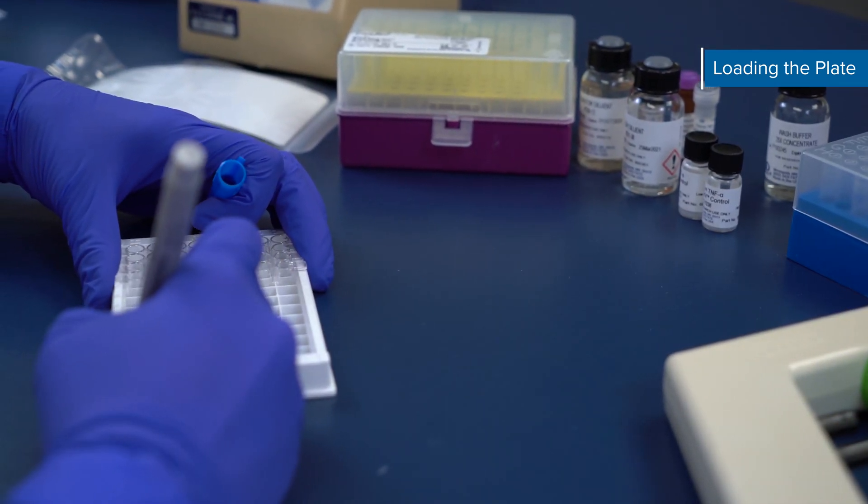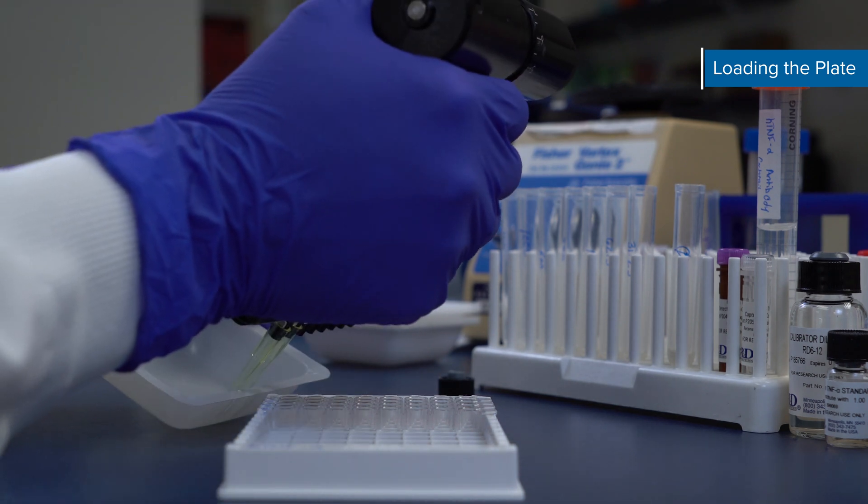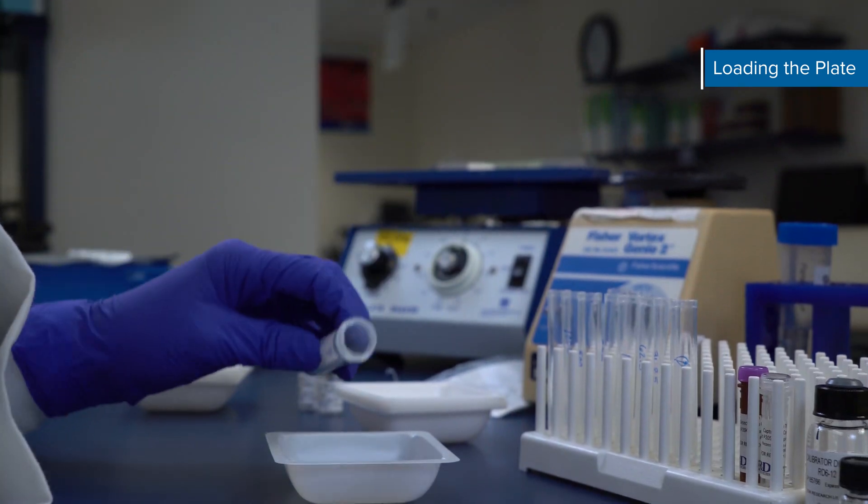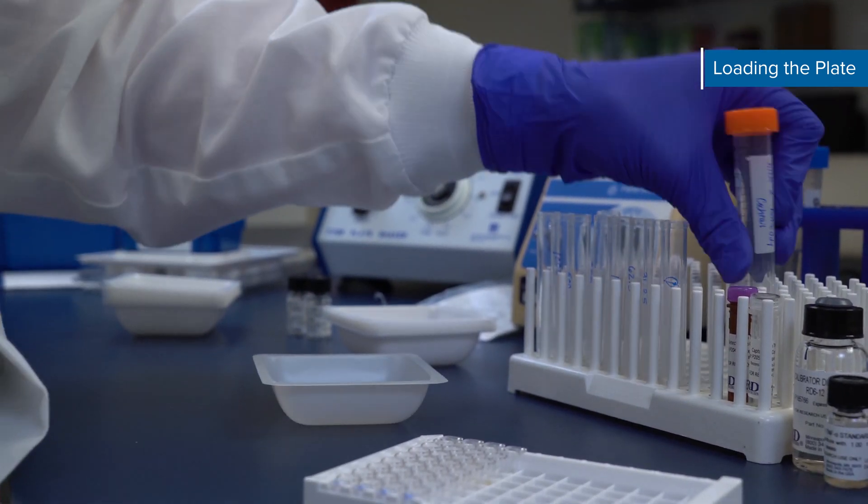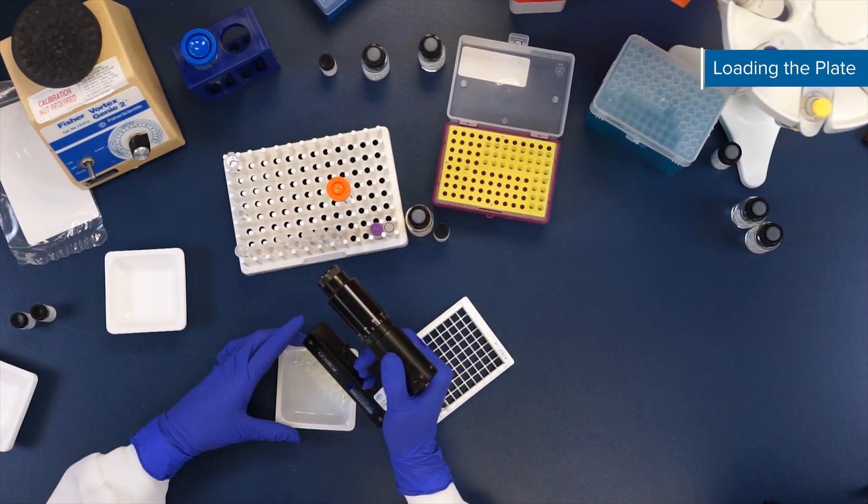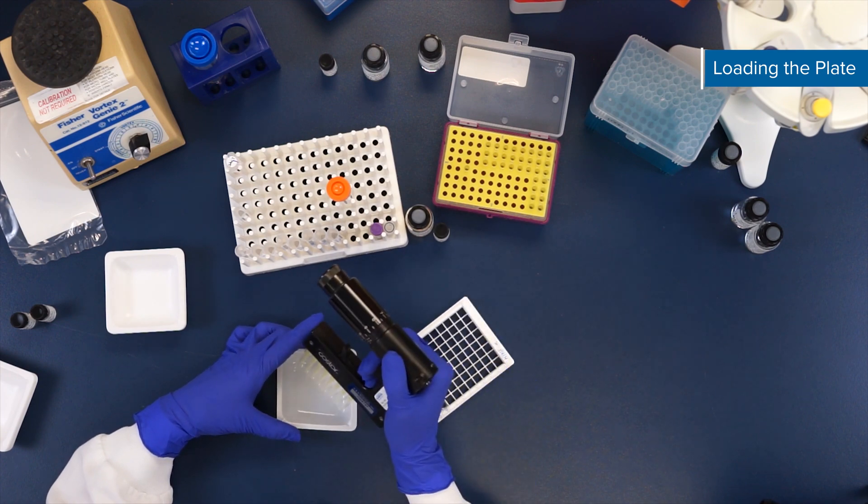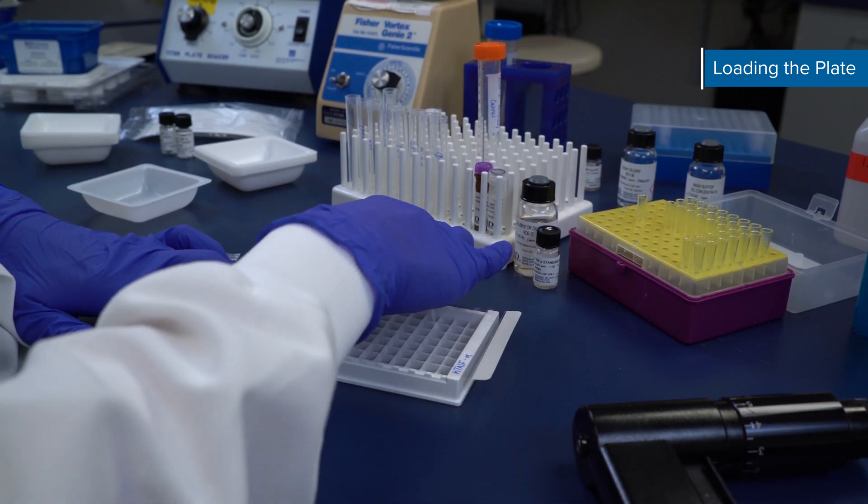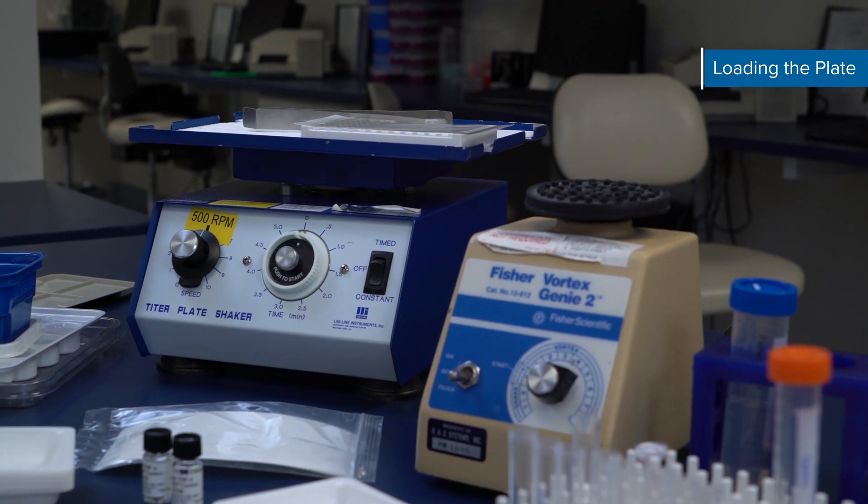First, add 50 µL of standard, control, or sample to each well. Then add 50 µL of the antibody cocktail per well. It's important to follow this order and use consistent pipetting technique. Avoid contact with pipette tips and the solution in the well when adding the antibody cocktail. When all samples and solutions have been added to the plate, cover it with the provided adhesive strip and ensure it is completely sealed. Incubate the plate for one hour at room temperature on the shaker at a 0.12 inch orbit at 500 plus or minus 50 RPM.